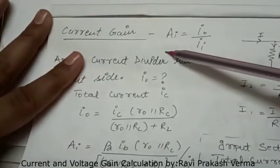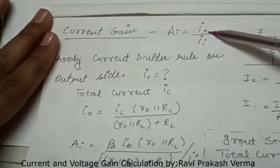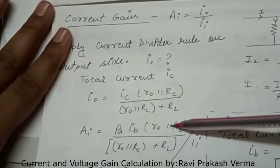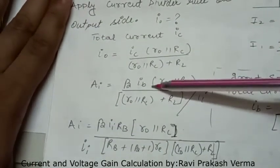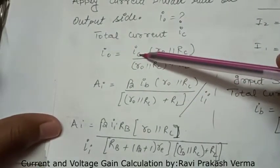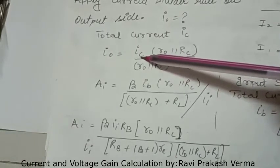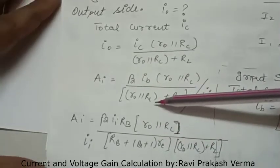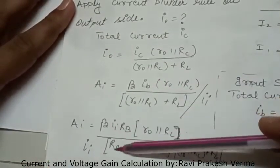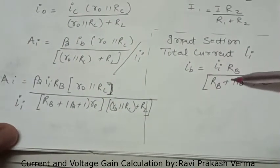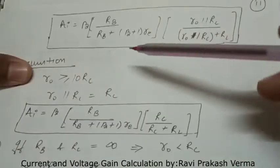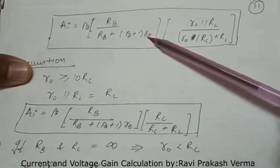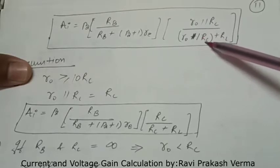Putting the value of I naught into the general equation — current gain equals I naught upon II — and replacing IC with beta times IB (from the relationship beta equals IC upon IB), and substituting the expression for IB, then canceling II, we get the current gain: A_i equals beta times [RB / (RB + (beta+1)RE)] times [R naught parallel RC / (R naught parallel RC + RL)].